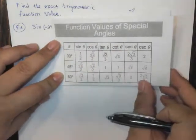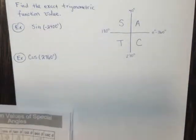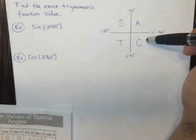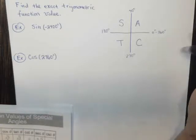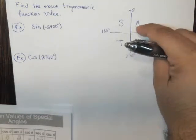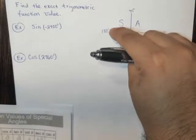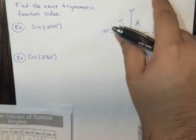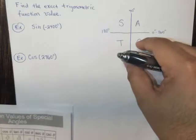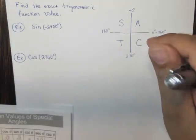So let's go ahead and take a look first. But before we do that, let's also point out something interesting about this chart. The interesting thing here, ASTC means all students take calculus. This is another mnemonic to remember where sine, cosine, and tangent are positive.